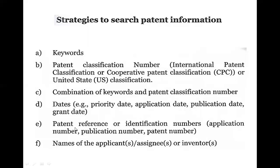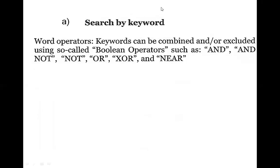Another strategy is patent reference or identification number. You can search for existing patent options and also the name of the applicant. If you want to search for a direct patent by company, you can use a name like Tata Steel.